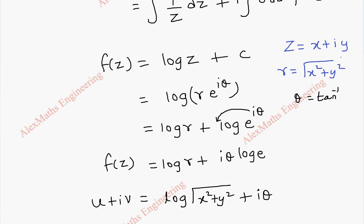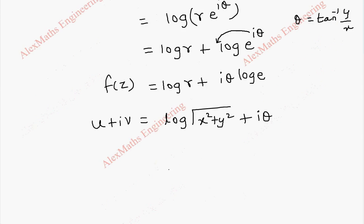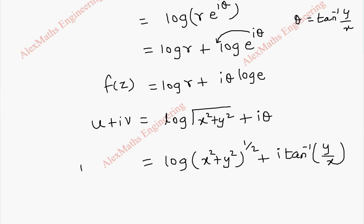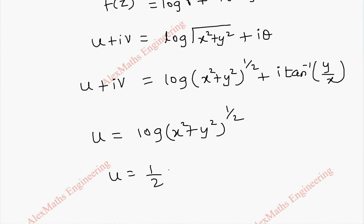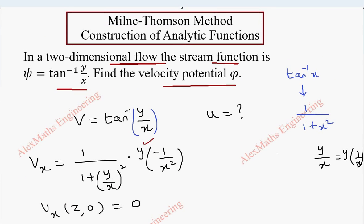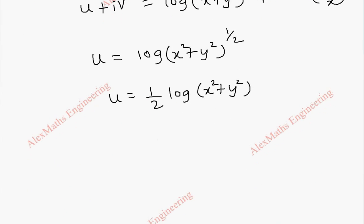The argument θ is tan inverse(imaginary part / real part), so θ = tan inverse(y/x). Therefore u + iv = log√(x² + y²) + i·tan inverse(y/x). Taking the real part, u = log√(x² + y²), which by the power rule equals (1/2)·log(x² + y²). The velocity potential is (1/2)·log(x² + y²).